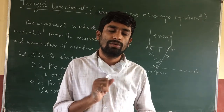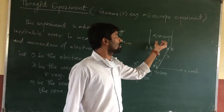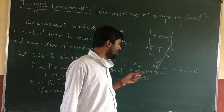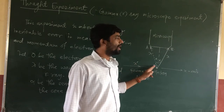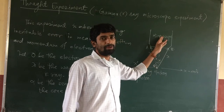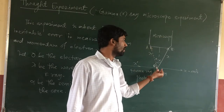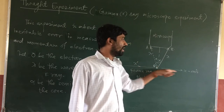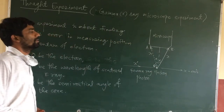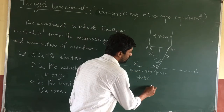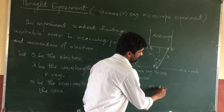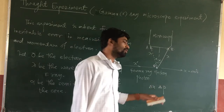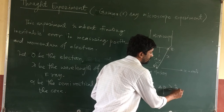In this setup, suppose this is the microscope. This is the position of the electron, and these are the gamma rays incident on the electron. The gamma rays will get scattered along the direction OA or along the direction OB. These gamma rays are incident along the x-axis direction. This experiment is performed to find the values of delta x and delta p.